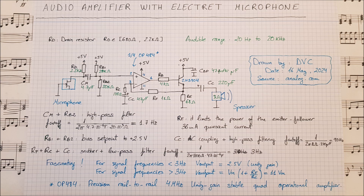We have capacitor CM at 4.7 microfarad and a 20 kilo ohm resistor going to ground, RB2. The cutoff frequency of this is 1.7 Hz. Because we only have 5 volts and cannot go negative, we need an amplifier whose reference voltage is at half that — so at 2.5 volts.